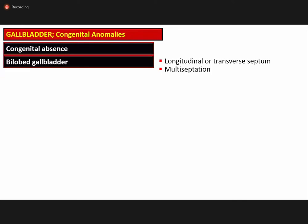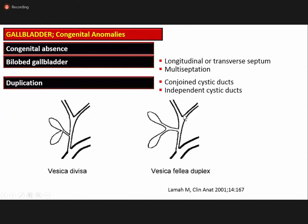The gallbladder may be congenitally absent, or there may be a bi-lobed gallbladder with a transverse or longitudinal septum, or multiple septa. Duplication of the gallbladder may occur with a conjoint cystic duct — termed vesica divisa — or with an independent cystic duct — termed vesica fellea duplex.